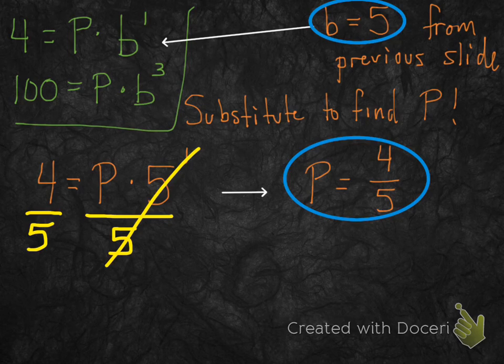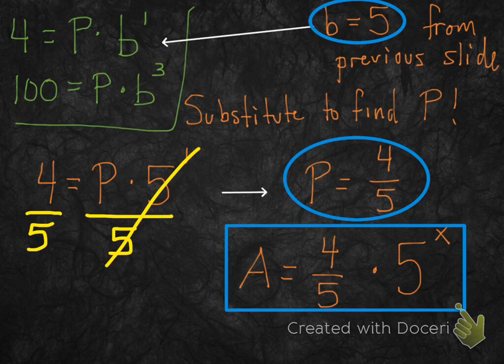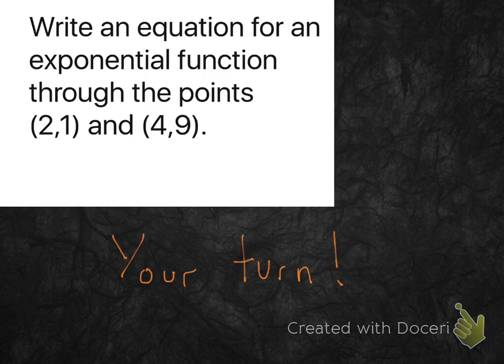But the question wanted us to write an equation, an exponential equation. So what we need to do is go back to our exponential formula, our exponential function, and just plug in p and plug in b. And there's your final answer. Now you might be tempted to cross out the 5s. Don't do that. The 4 fifths does not have x as an exponent. Only the 5 to the x has x as an exponent. So you don't get to mix and match those things. All right, your turn.